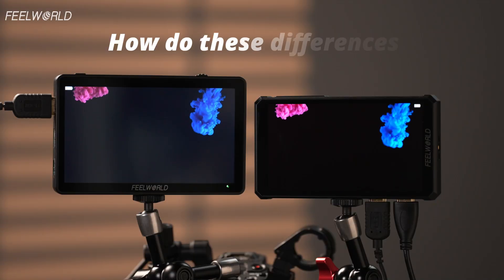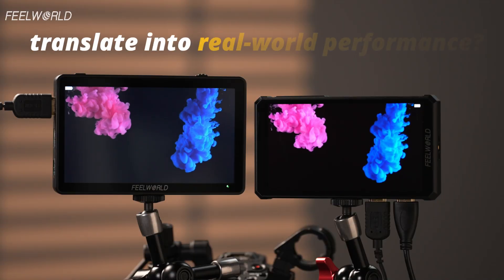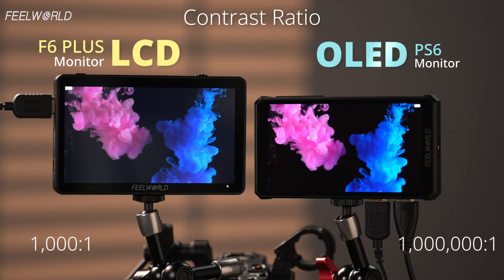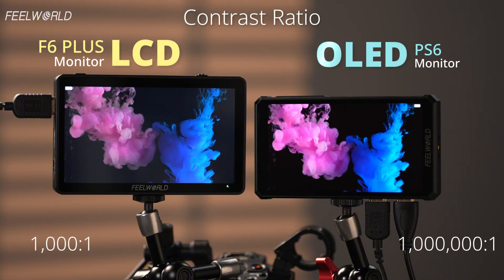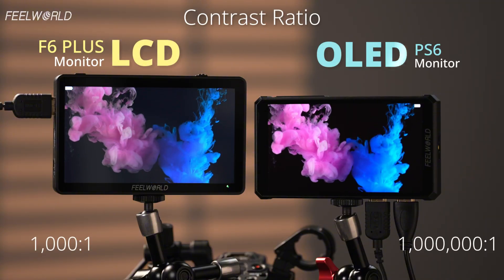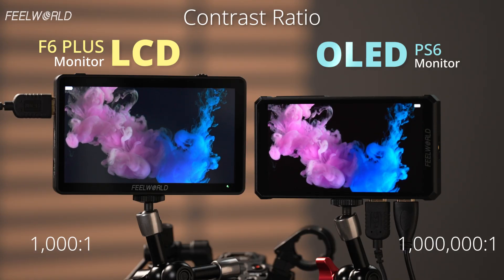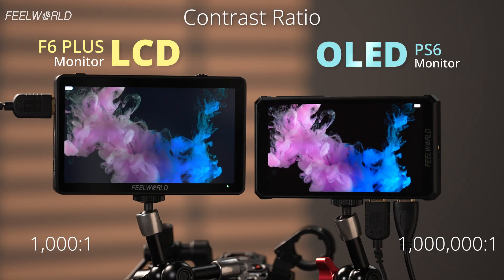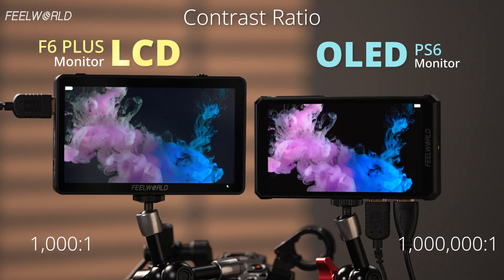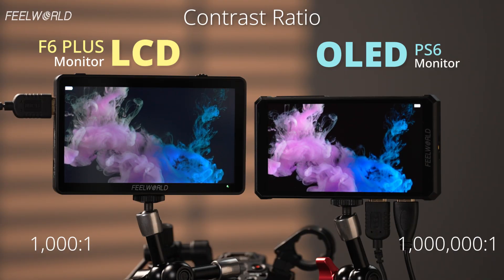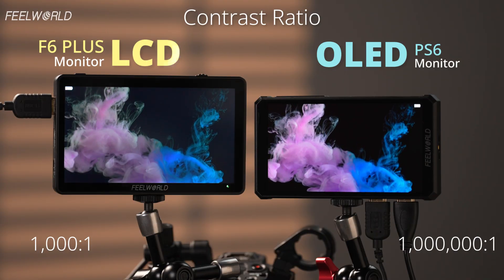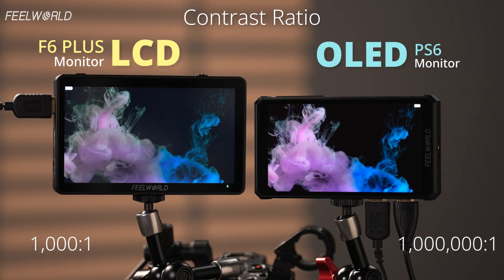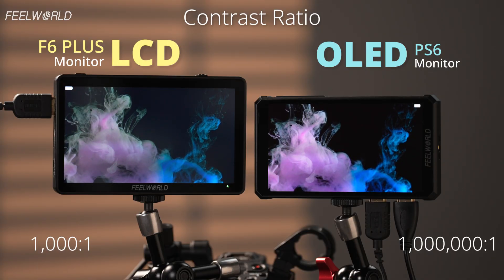So how do these differences translate into real-world performance? OLED achieves very high contrast because each pixel can switch off completely, delivering deeper blacks and finer shadow detail. LCD relies on a backlight, so blacks sit above a brightness floor, making native contrast lower and dark detail less pronounced than OLED.